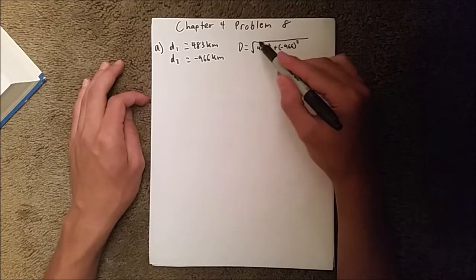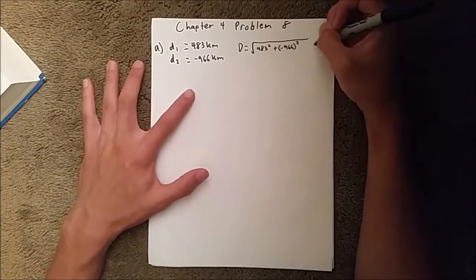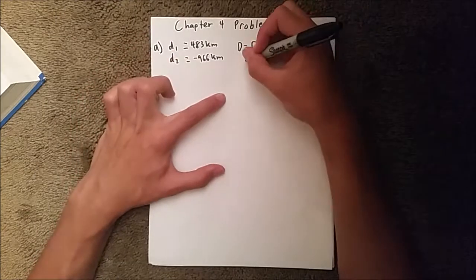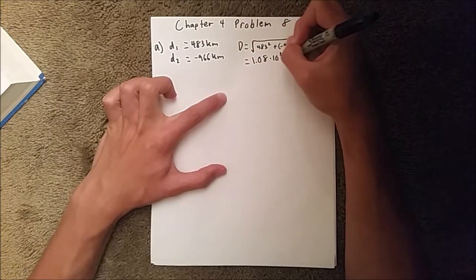And as we know, this is the distance formula, or the magnitude formula, either or. And when you put that in your calculator, you should get 1.08 times 10 to the third kilometers.